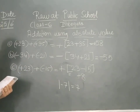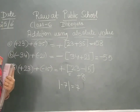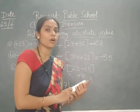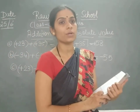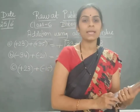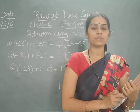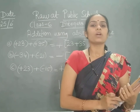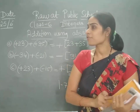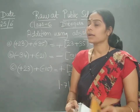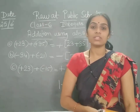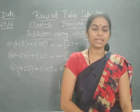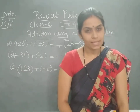So these were the methods of addition and subtraction using the number line, and the third method was addition using absolute value. We have covered this topic in chapter 6, integers. We will meet tomorrow. Take care. Goodbye. Thank you.